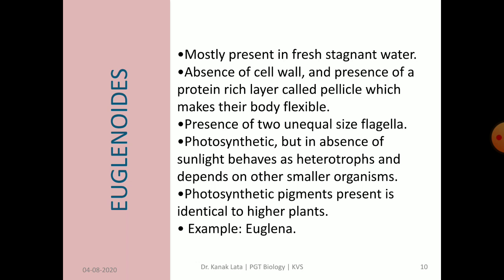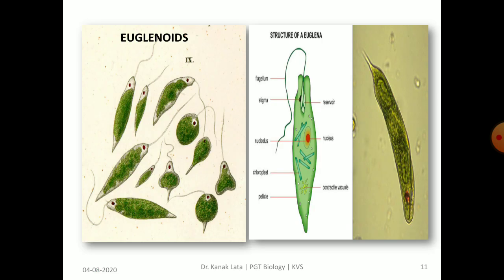If sunlight is present, euglenoids behave as autotrophs. When sunlight is not present, they behave as heterotrophs and depend on other smaller organisms for food. A common example of euglenoid is Euglena. Here you may observe different euglenoids.